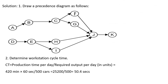Let's draw the precedence diagram from the table. Tasks A and D have no predecessors, so we place them first. B has A as a predecessor, so B comes after A. C has B as a predecessor, so C follows B. Tasks D and G require C as a predecessor. Activities D, G, H, and I are all predecessors for J, so all four must be completed before J. Finally, J is the predecessor for K. This completes the precedence diagram.